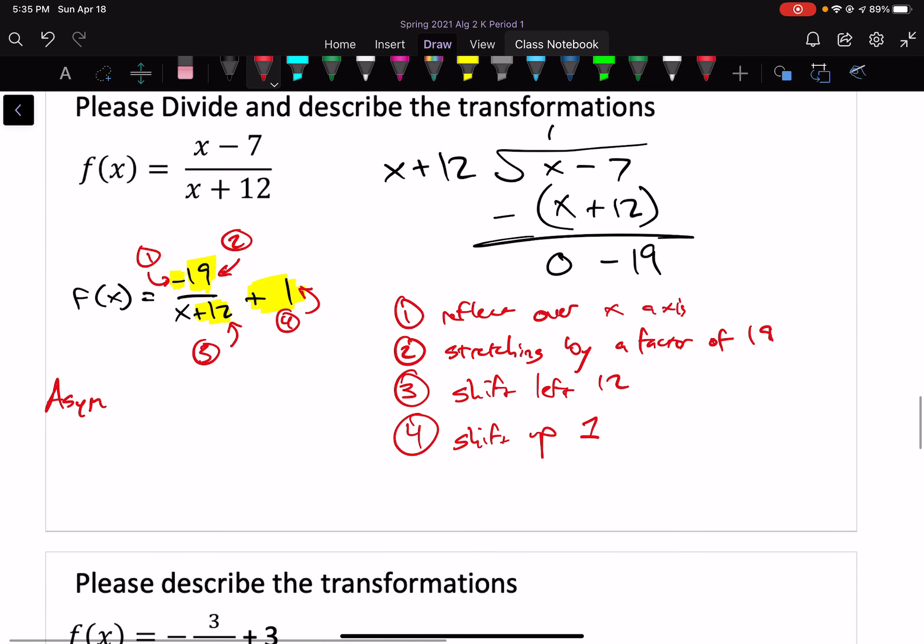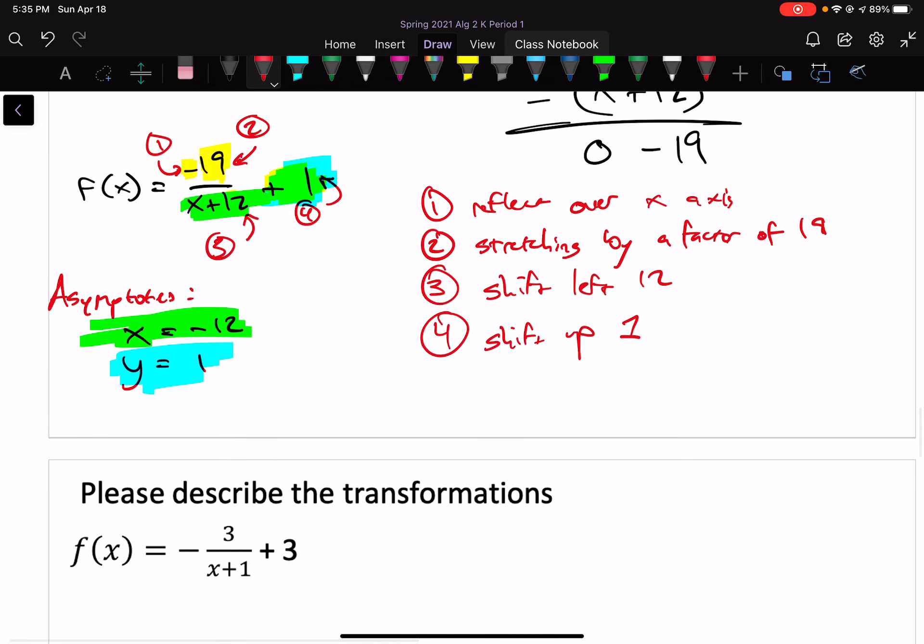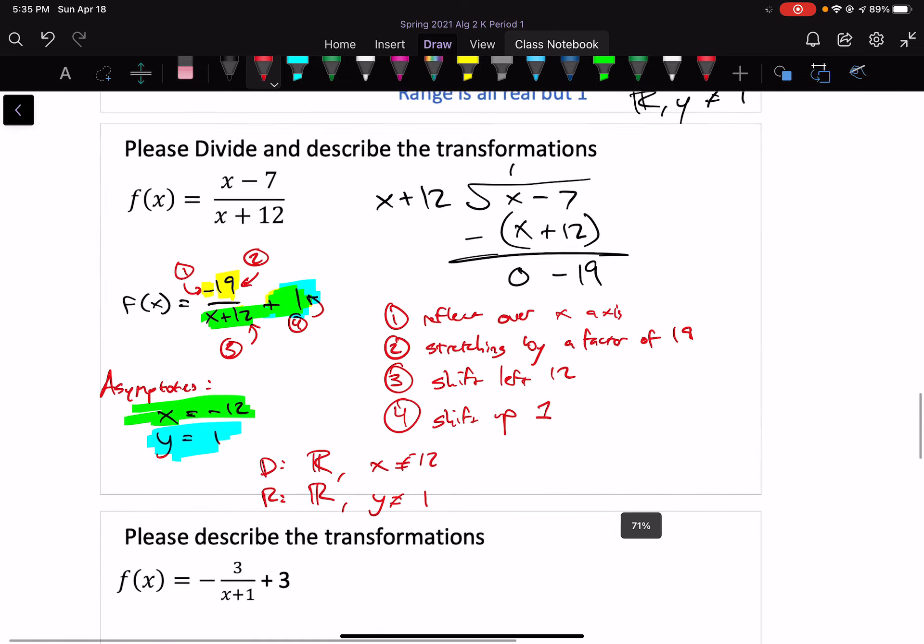So asymptotes and domain range. First off, asymptotes. Asymptotes would be x equals negative 12, y equals 1. x equals negative 12 is coming from the bottom part of the function. y equals 1 is coming from this plus 1 on the end. That means that our domain is all real numbers, but not negative 12. And our range is all real numbers, but not y equals 1.